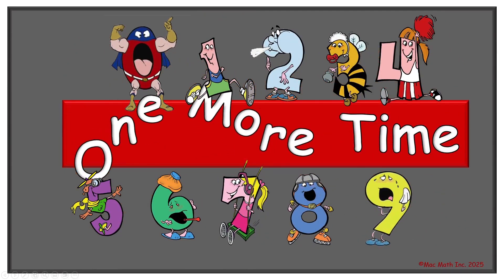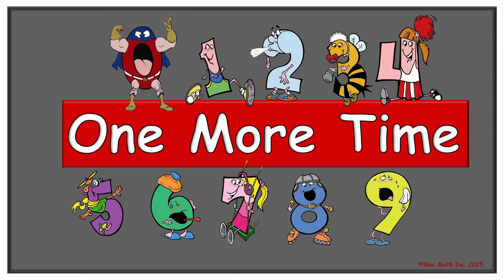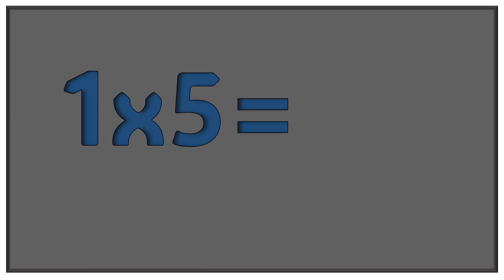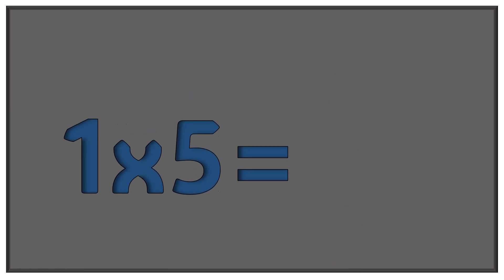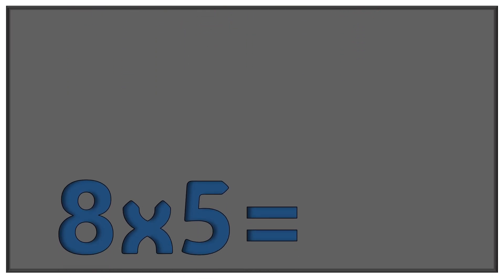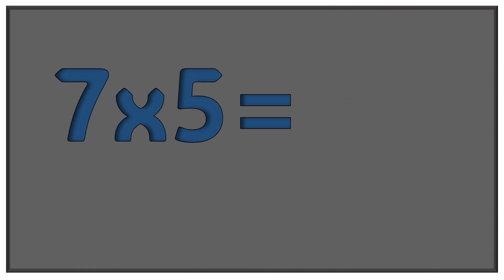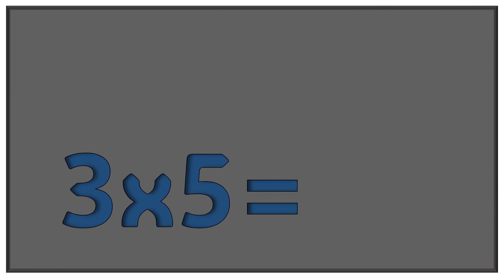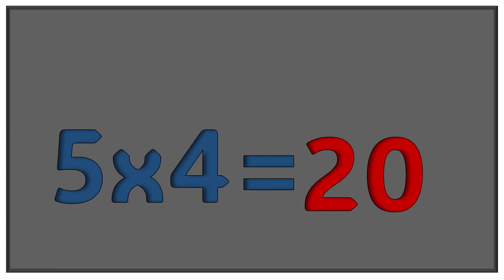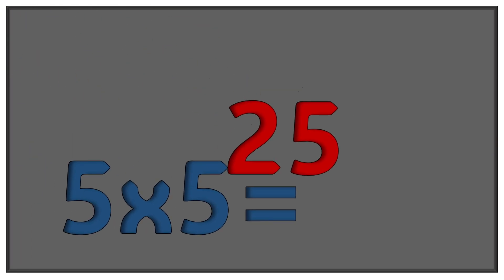Now let's try it one more time but in a different order. Is everyone in agreement? Okay, then let's go! 5 times 2 equals 10. 5 times 6 equals 30. 1 times 5 equals 5. 5 times 0 equals 0. 8 times 5 equals 40. 7 times 5 equals 35. 3 times 5 equals 15. 5 times 4 equals 20. 5 times 5 equals 25.